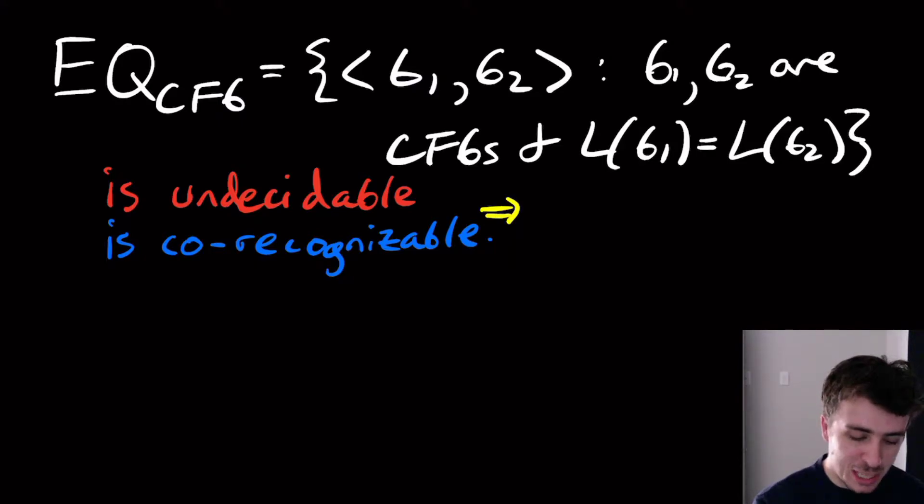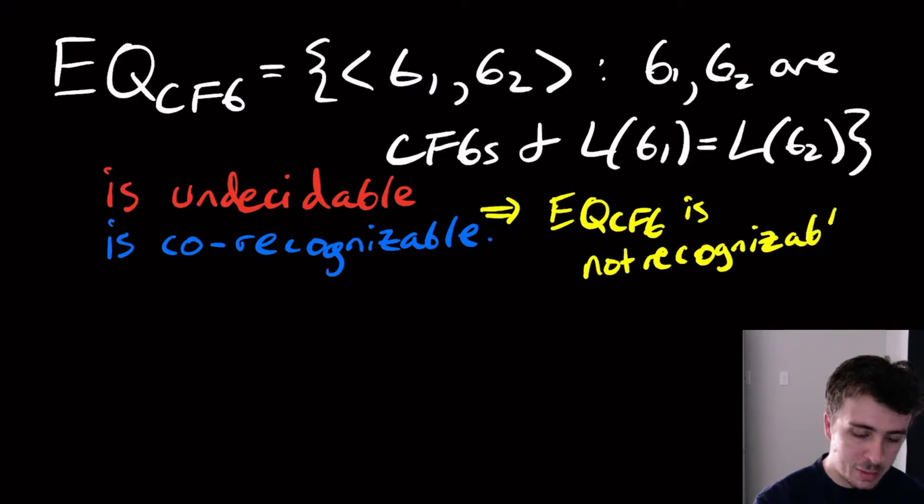this implies that EQ_CFG is not recognizable. Because if it were, we'll show that its complement is recognizable too. That would imply that it's decidable, but we'll show that it's not decidable.